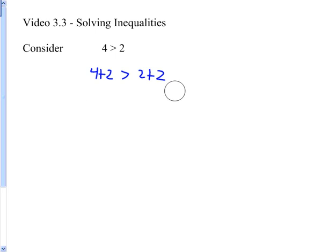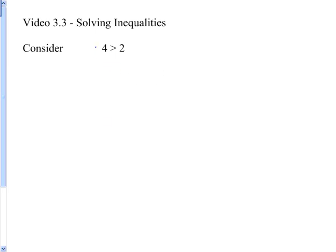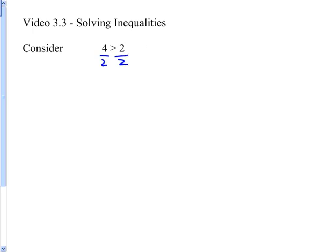What happens if instead of adding, I subtract 2 from both sides? We see 2 is greater than 0 — that's true as well. What happens if I multiply both sides by 2? I get 8 is greater than 4 — that's still true. What happens if I divide both sides by 2? Well, 2 is greater than 1 — that's still true too.